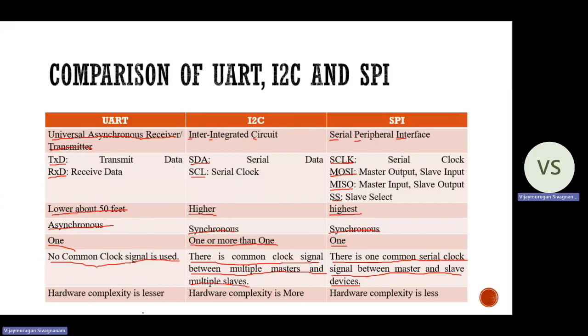Regarding hardware complexity: in UART, hardware complexity is lesser. In I2C, hardware complexity is more. In SPI, hardware complexity is less.